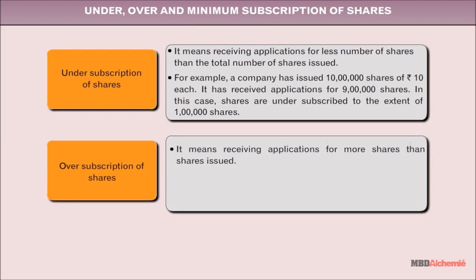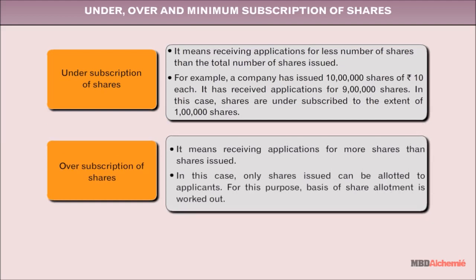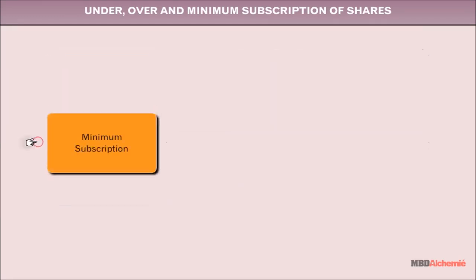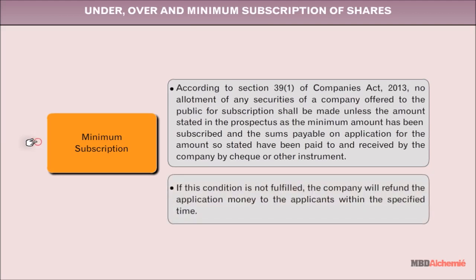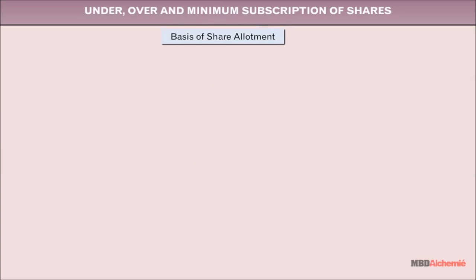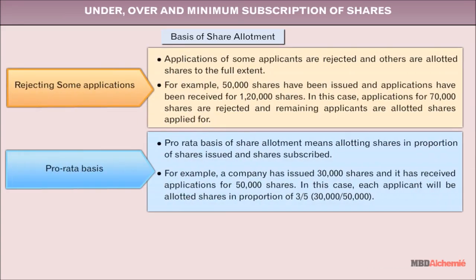Oversubscription of Shares means receiving applications for more shares than shares issued. In this case, only the shares issued can be allotted to applicants, and a basis of share allotment is worked out. Minimum Subscription: According to Section 39(1) of the Companies Act 2013, no allotment of any securities offered to the public shall be made unless the minimum amount stated in the prospectus has been subscribed and the sums payable on application have been received. If not fulfilled, the company will refund the application money within the specified time. The three bases for allotment in oversubscription are: Rejecting Some Applications, Pro-Rata Basis, and the Combination Method.